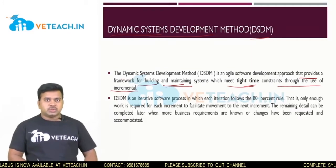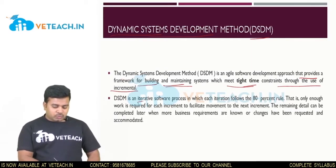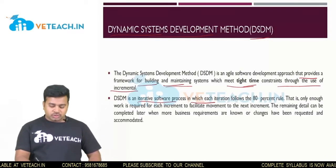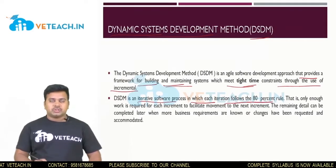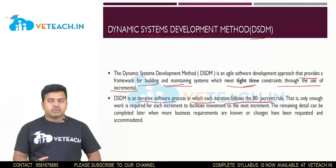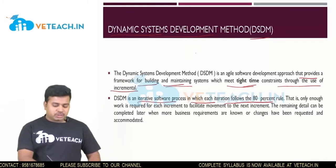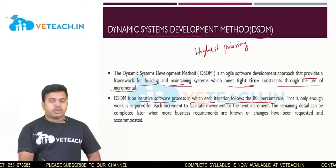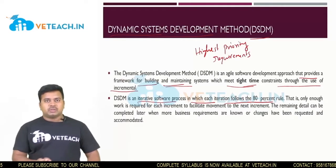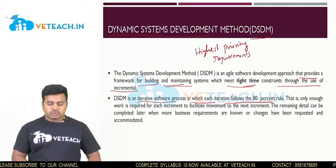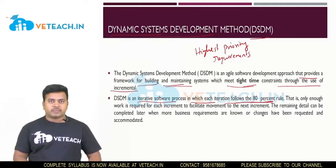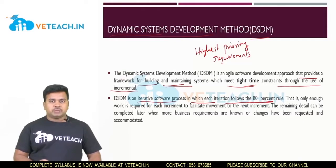DSDM is an iterative software process in which each iteration follows the 80% rule. In each iteration, the highest priority requirements are taken, and from those requirements, only 80% of the work is prepared. This is called the 80% rule.